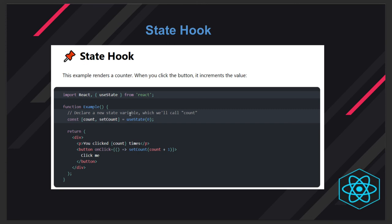We've heard that functional components are like 'dumb' components that don't have state — they just take props and render them in JSX. But now they can actually have state, and whenever the state changes they can re-render the JSX for that component. We can use the useState hook for this. It provides a mechanism where a functional component can have a state variable like 'count', and you can update that count using 'setCount'.